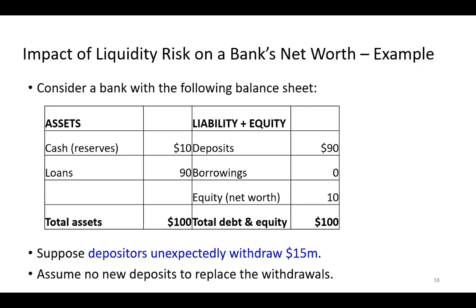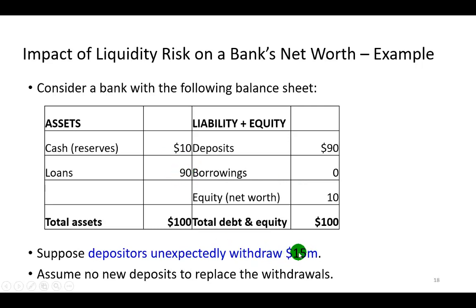What are the options? Well, it must either consider taking out some borrowings or liquidating some of these 90 million dollars of assets, so as to raise the additional 5 million bucks, after it's liquidated its reserves.